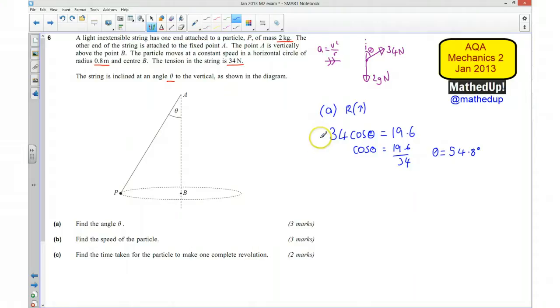That's our angle theta. Now part B, we're asked to find the speed of the particle. In order to find this I'm going to resolve horizontally. This time we're not in equilibrium.